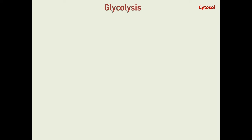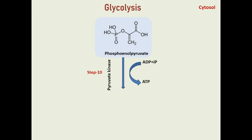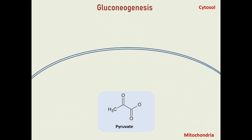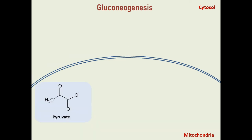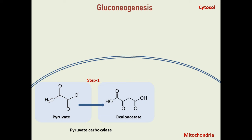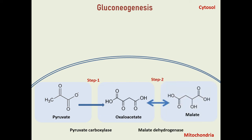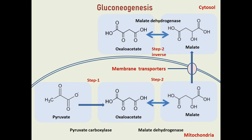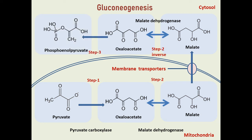The first step in gluconeogenesis is the conversion of pyruvate to phosphoenolpyruvate, which requires several steps and enzymes: pyruvate carboxylase, PEP carboxykinase, and malate dehydrogenase. Pyruvate carboxylase is found in the mitochondria and converts pyruvate into oxaloacetate. Because oxaloacetate cannot pass through the mitochondrial membrane, it must first be converted into malate by malate dehydrogenase. Malate can then cross into the cytoplasm, where it is converted back into oxaloacetate, which is then converted into phosphoenolpyruvate via PEP carboxykinase.